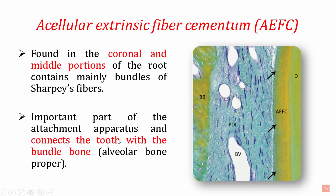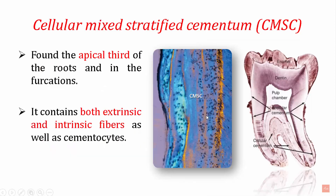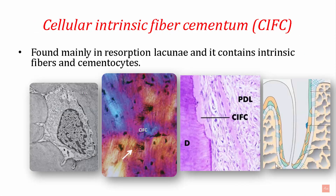The third type is cellular mixed stratified cementum, found mainly in the apical third of the roots and in the furcation area. This zone contains cementocytes and includes both extrinsic fibers — Sharpey's fibers from the periodontal ligament — as well as intrinsic fibers secreted by the cementocytes. Cellular mixed stratified cementum is most commonly seen in the furcation areas and apical areas.